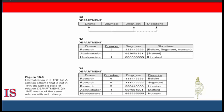Informally, each relation resembles a table of values, or to some extent a flat file of records. It's called a flat file because each record has a simple, linear, or flat structure. There are three main techniques to achieve first normal form for such a relation. The first is to remove the attribute D_Locations that violates first normal form and place it in a separate relation, such as Department_Locations, along with the primary key D_Number of Department.